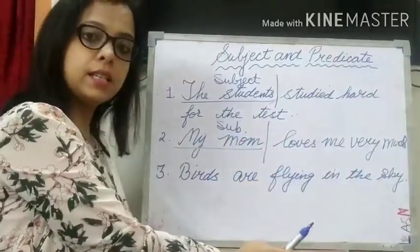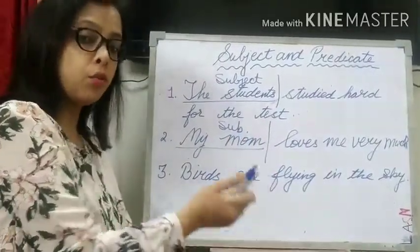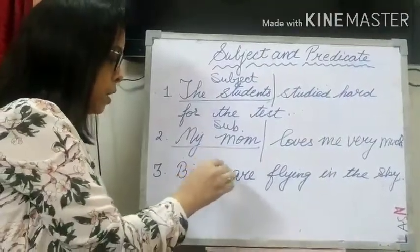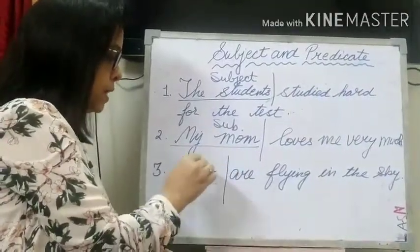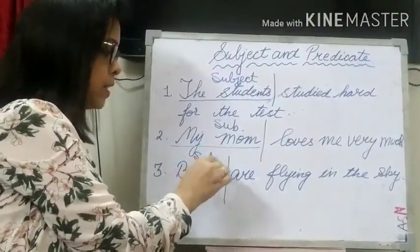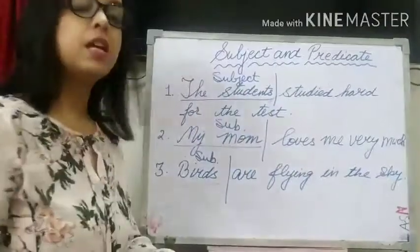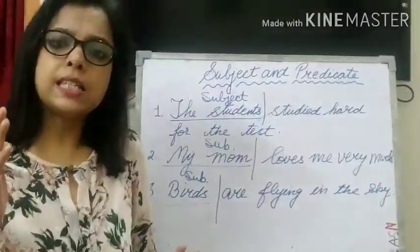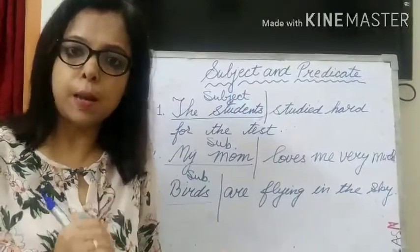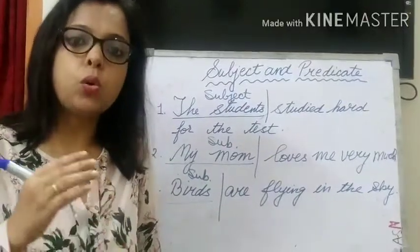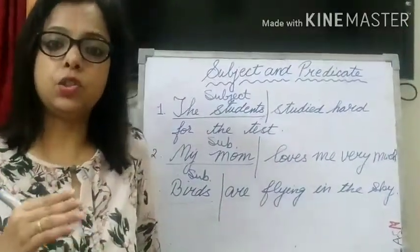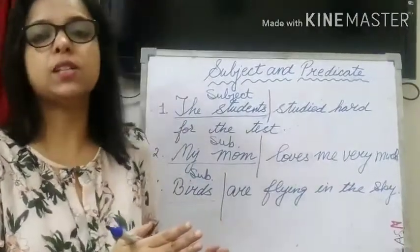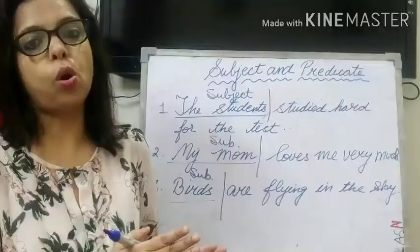Birds are flying in the sky — about what are we talking? We are talking about birds, so birds is the subject. Secondly, we see children that we have got something to say about the subject. The part of the sentence in which we say something about the subject is called the predicate.